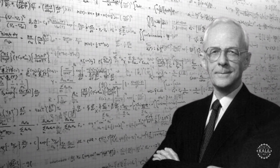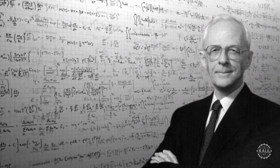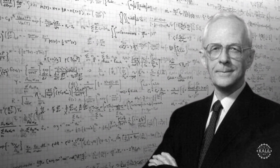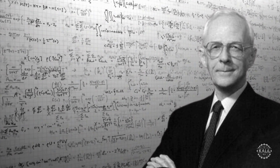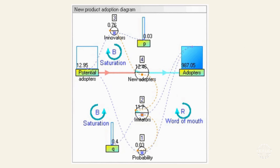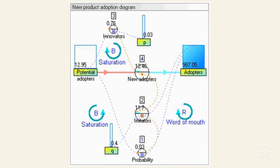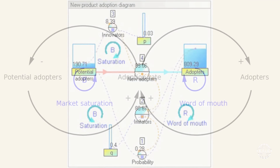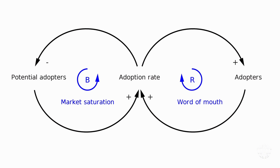In 1964, Jay Forrester introduces System Dynamics, a methodology for modeling and simulating complex systems. The approach unlocks the ability for engineers and scientists to understand and predict the behavior of interconnected systems over time.